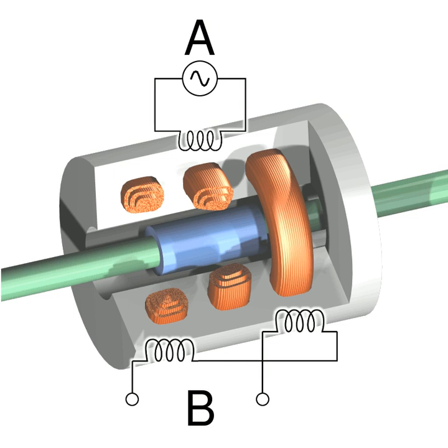Because the sliding core does not touch the inside of the tube, it can move without friction, making the LVDT a highly reliable device. The absence of any sliding or rotating contacts allows the LVDT to be completely sealed against the environment.